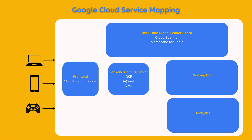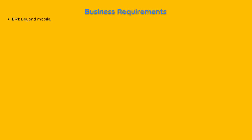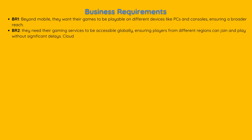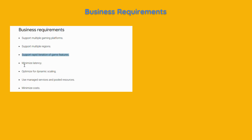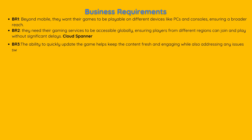Their platform will support various devices. Now let's move on to the business requirements to add more details to this design. Business requirement 1: beyond mobile, they want their games to be playable on different devices like PCs and consoles, ensuring a broader reach. Business requirement 2: they need their gaming services to be accessible globally, ensuring players from different regions can join and play without significant delays — addressed by Cloud Spanner. Business requirement 3: the ability to quickly update the game keeps content fresh and engaging — let's add a CI/CD pipeline to our design.